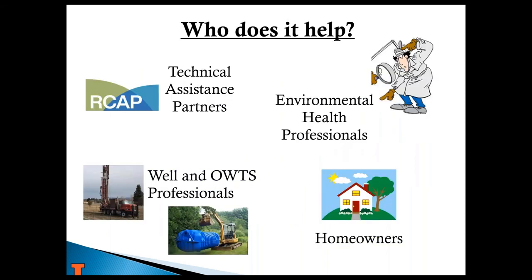The OWTS assessment is broken down into 14 sections, and it can either stand alone or go along with the well assessment. So who do these assessments help? They were originally designed for RCAP technical assistance partners or TAPs. These TAPs are non-regulatory and respond to people with questions or homeowners who want more information all across the nation. It could also be used where an environmental health professional, such as a health inspector, could use this as a tool to perform an inspection in a concise, clear manner, keeping all the information in one form.